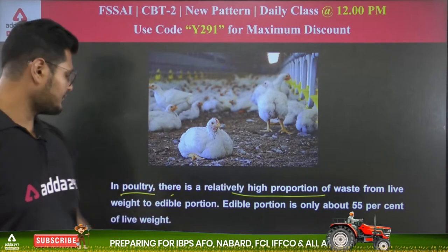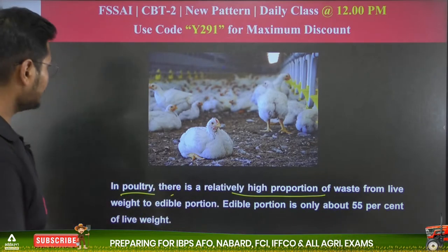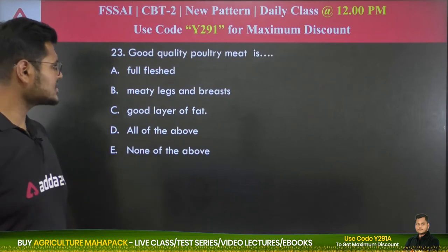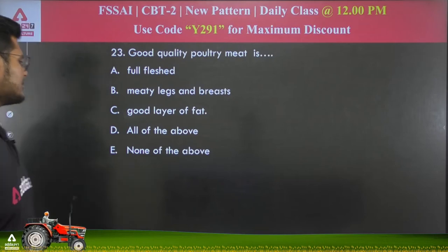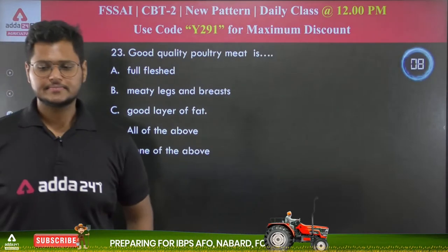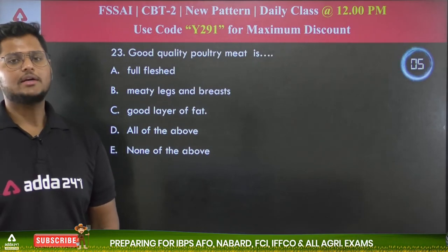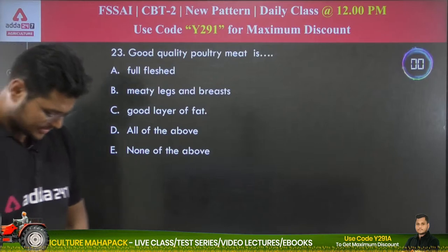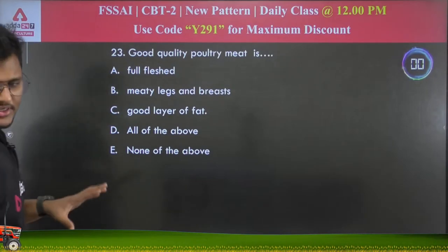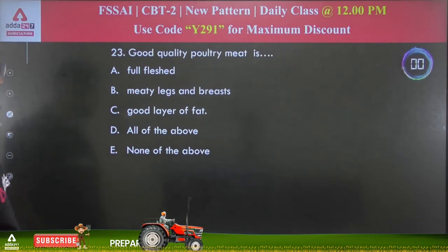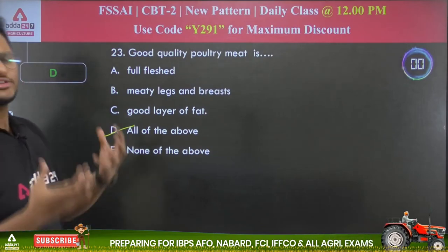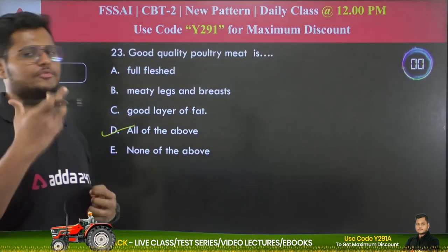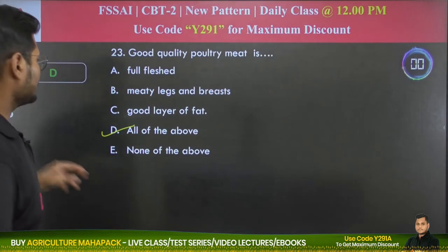Question 23: Good quality poultry meat should be — full fleshed with meaty legs and breasts, have a good layer of fat, all of the above, or none of the above? The answer is all of the above. Good quality poultry meat should be full fleshed, have meaty legs and breasts, and have a good layer of fat, as these characteristics indicate quality.